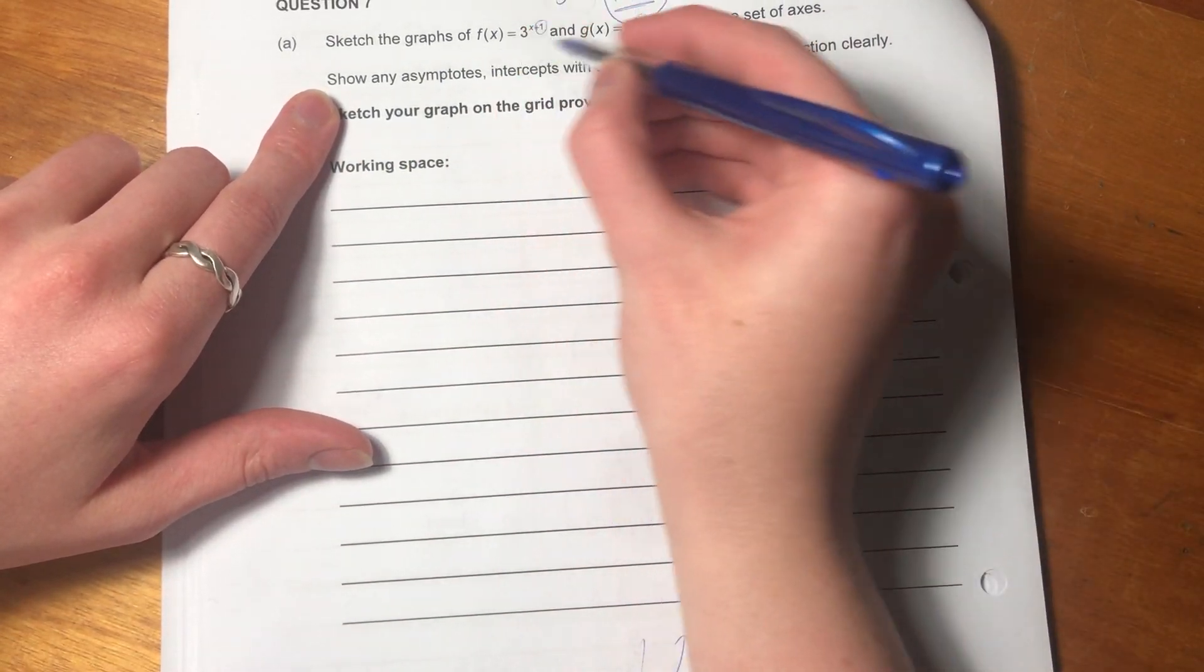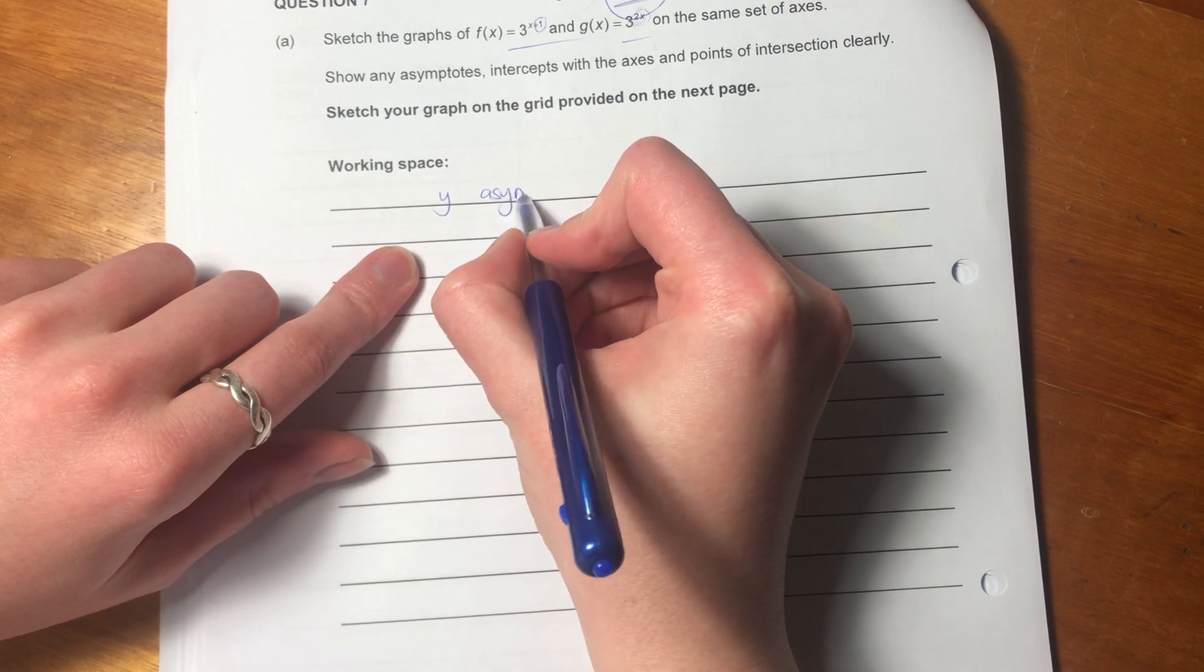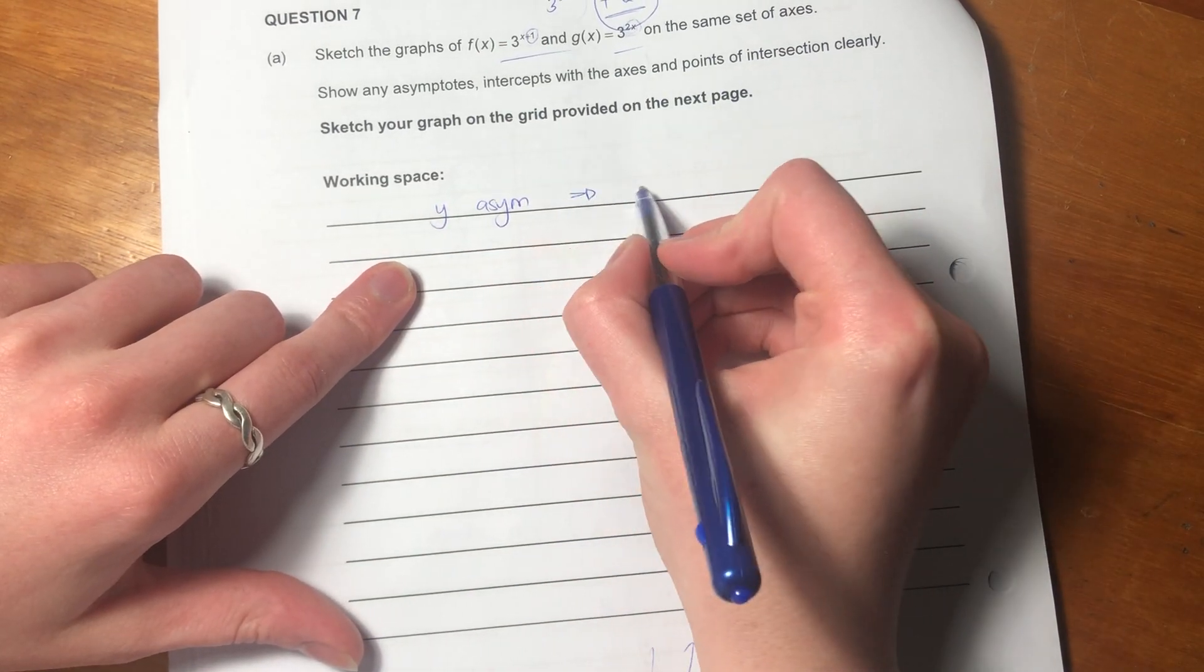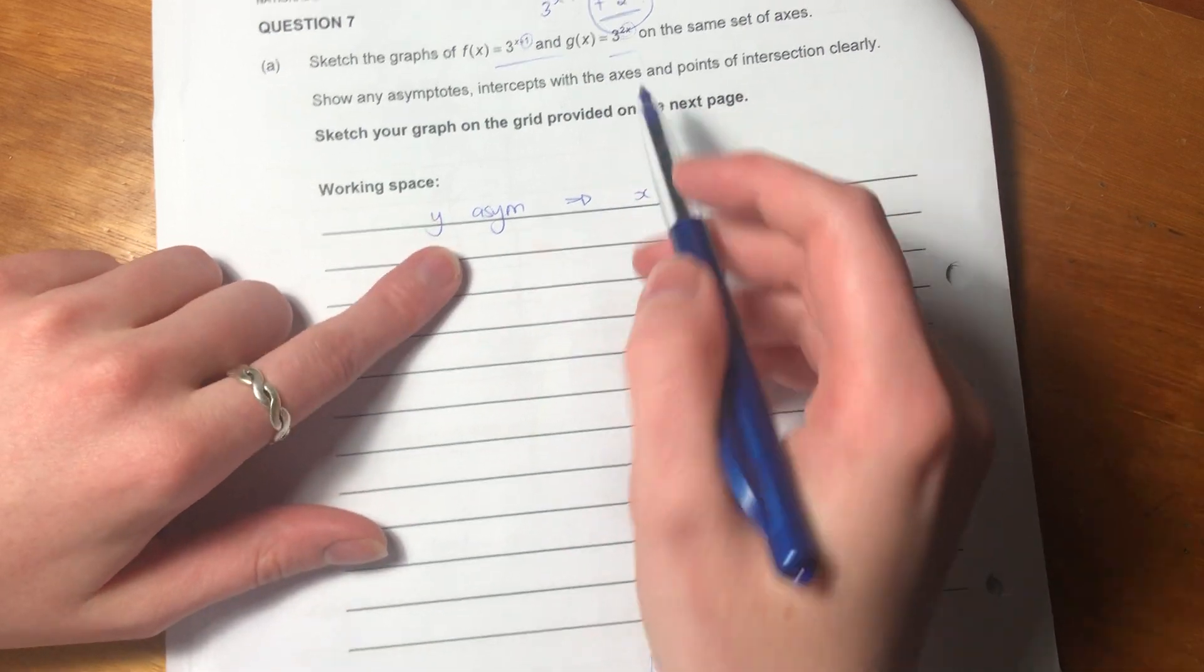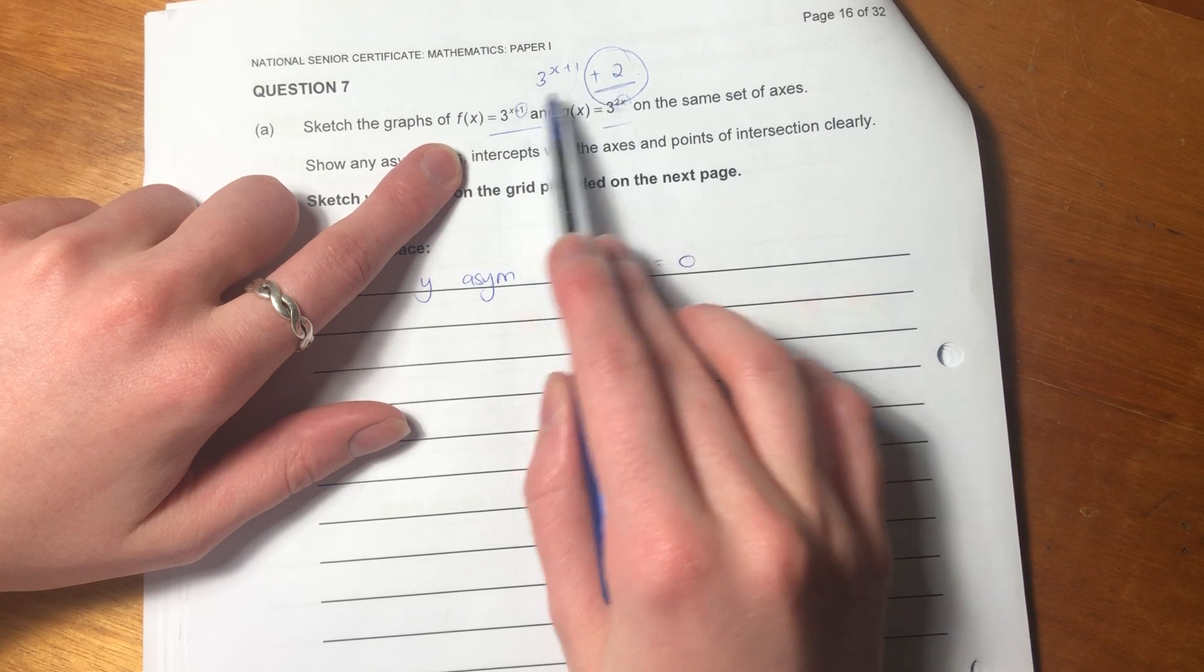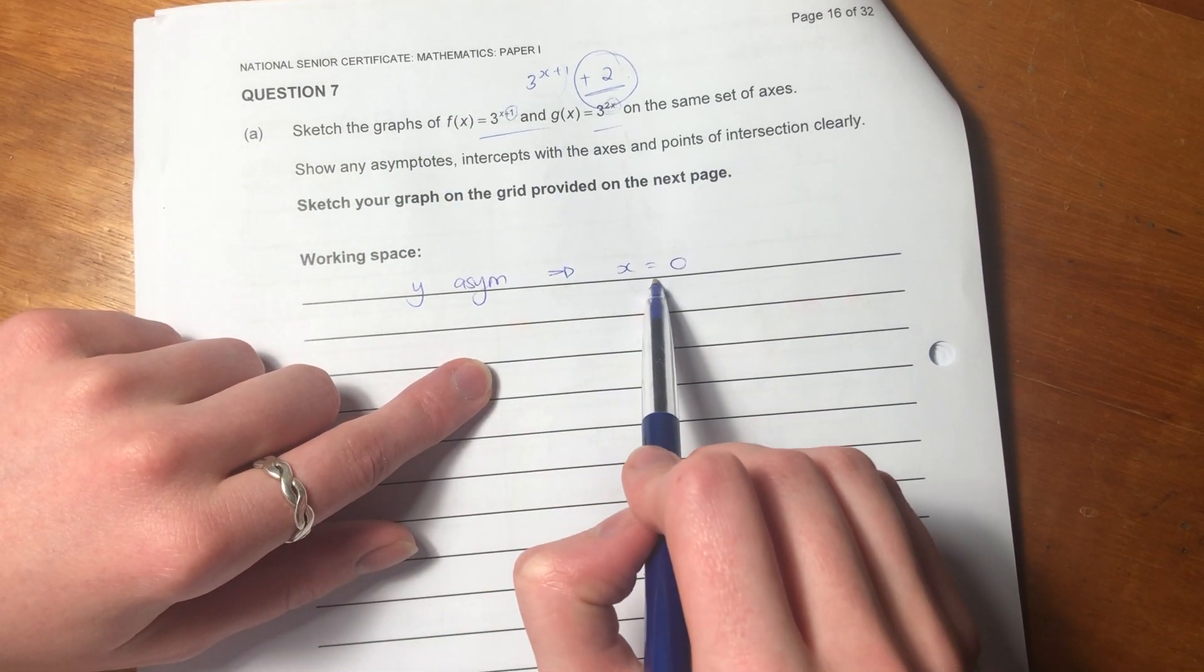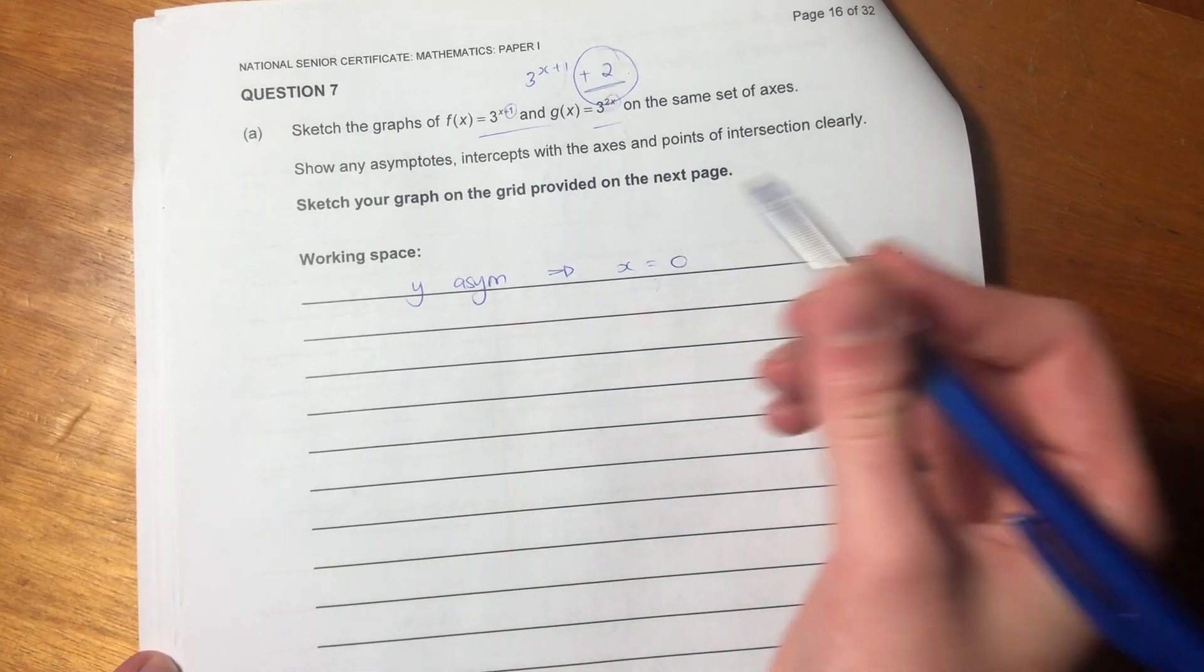Okay, so asymptotes, both of the asymptotes, the y asymptotes of both of these graphs is where x equals zero. Because there is no shift in the y for either of them. And it's literally just going to be the x-axis. This is a property of exponents. So we have that.